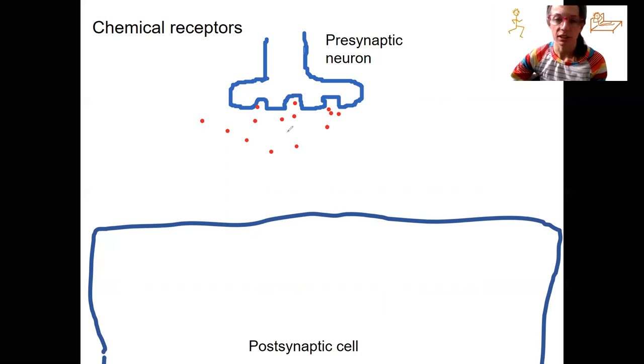We've got neurotransmitter released from the presynaptic neuron that's going to bind to receptors on the cell that it's talking to, the postsynaptic cell. There are two types of receptors. One is ionotropic. This is direct signaling.